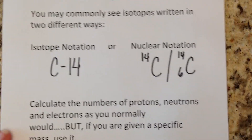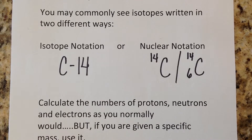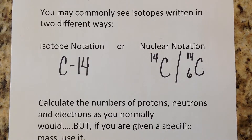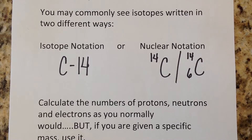Carbon-14 is used in radioactive dating because it is actually radioactive — it decays over time and releases radiation. When a living organism dies, the carbon-14 in its body slowly begins that decaying process. Because scientists know the rate at which it decays, they can use that information to date when an old organism once lived. Carbon-14 is the only isotope of the three that is radioactive and can be used for that purpose.